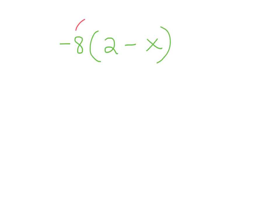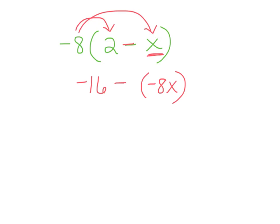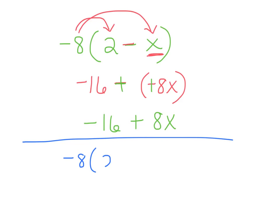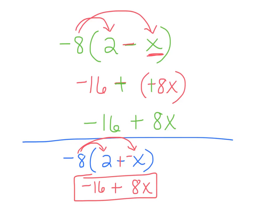Let's try another one: negative 8 times (2 minus x). I do negative 8 times 2, which is negative 16. Keep the minus sign. Then negative 8 times x is negative 8x. I see a subtraction sign, so I add the opposite: negative 16 plus 8x. Alternatively, you can change to add the opposite first: negative 8 times 2 is negative 16, plus a negative times a negative is positive 8x — same answer either way.